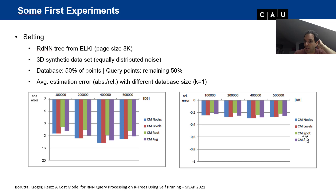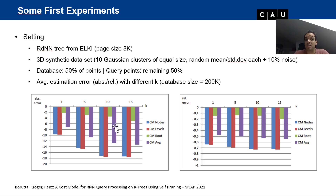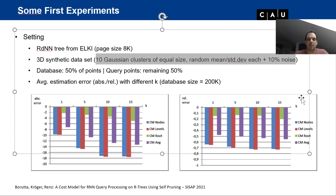For the uniform data with varying k, the picture is a little different: the more sophisticated variants perform worse, and the simplest variant is again the best. This is for uniformly distributed data, not clustered data.